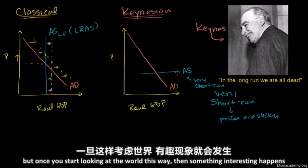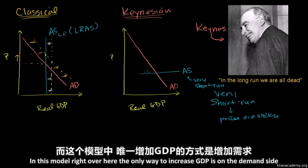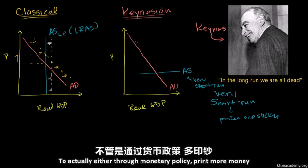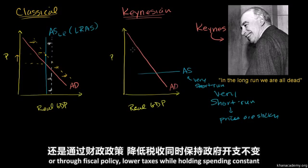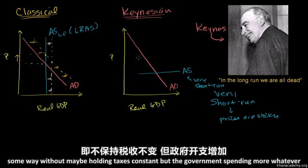Once you start looking at the world this way, something interesting happens. In the classical model, the only way to increase GDP was on the supply side. In the Keynesian model, the only way to increase GDP is on the demand side — either through monetary policy, printing more money, or through fiscal policy: lower taxes while holding spending constant, or deficit spending.